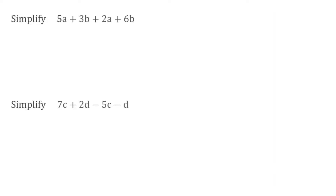So if we look at this first example, we have simplify 5a plus 3b plus 2a plus 6b. The question only says simplify, but we should know by looking at this question that we have multiple terms of a and multiple terms of b. So this is an expression where we'd be able to combine those terms and make it into a more simplified expression.